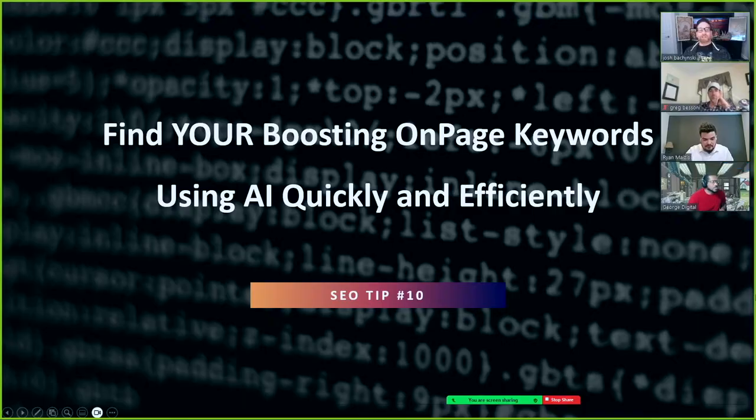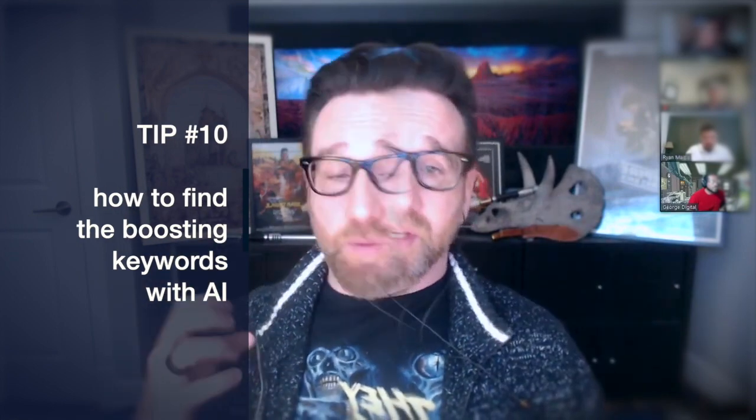Today is how to find the boosting keywords. I'm continuing my SEO tips — teaching a giant SEO course in small bites. Today's tip, SEO tip number 10, is: find your boosting on-page keywords using AI quickly and efficiently. It's so important to make sure in SEO that you're doing this quickly and efficiently. SEO is not only about ranking highest — it's about ranking highest fastest.